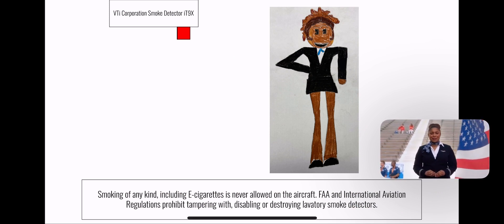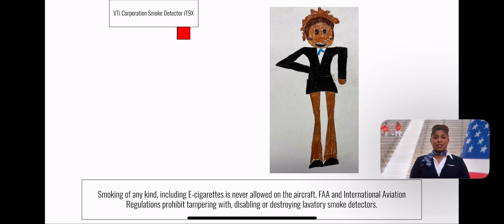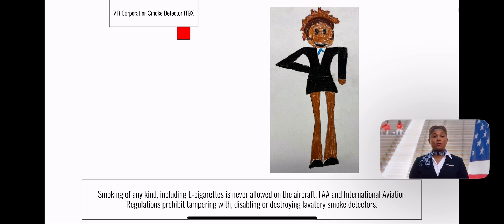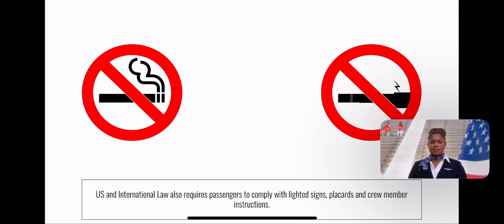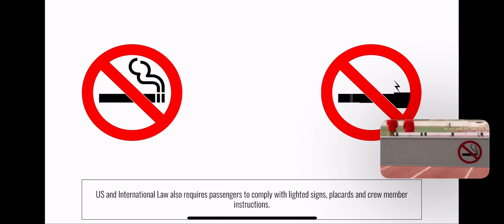Smoking is never allowed on the aircraft. FAA regulations prohibit tampering with, disabling, or destroying lavatory smoke detectors. U.S. law also requires passengers to comply with lighted signs and crew member instructions.